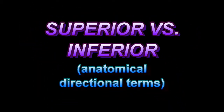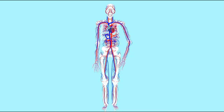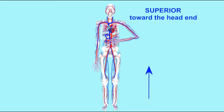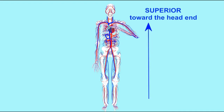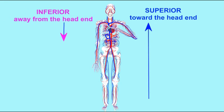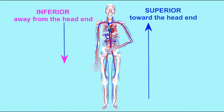Anatomists need to be precise with their language, and instead of terms like top or bottom or up or down, the terms superior and inferior are used. Sometimes they're synonyms: cranial, meaning towards the head, or caudal, towards the tail. So superior means moving towards the head or the portion of an anatomical structure which is oriented towards the head, while inferior is away from the head or the side of an anatomical structure which faces away from the head.